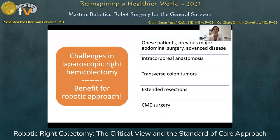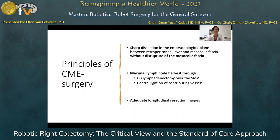Also, if we look at extended resections or CME surgery, what are the principles of CME surgery? It is comparable to TME surgery in rectal resections. We perform sharp dissection in embryological planes without disruption of the mesocolic fascia. We also harvest as many lymph nodes as possible by clearing the D3 lymph nodes around the superior mesenteric vessels and performing high ligations of contributing vessels.